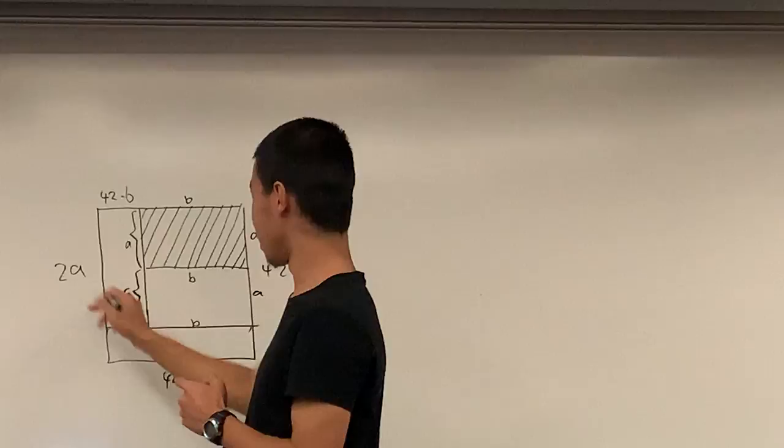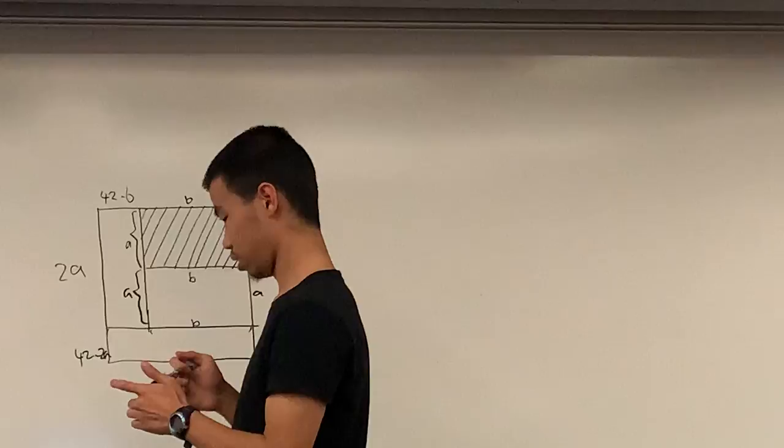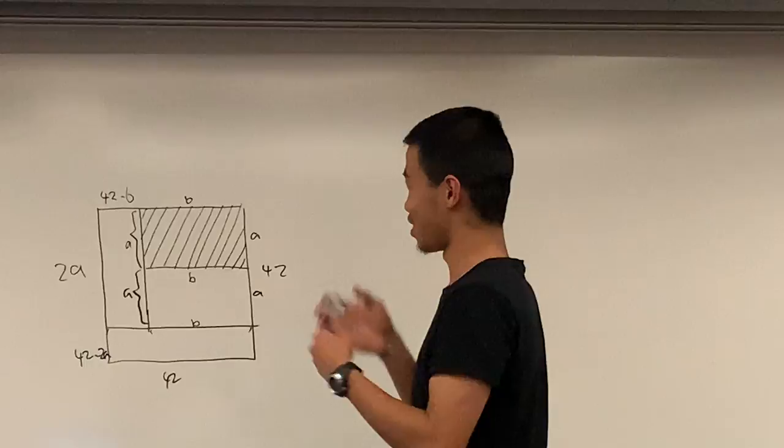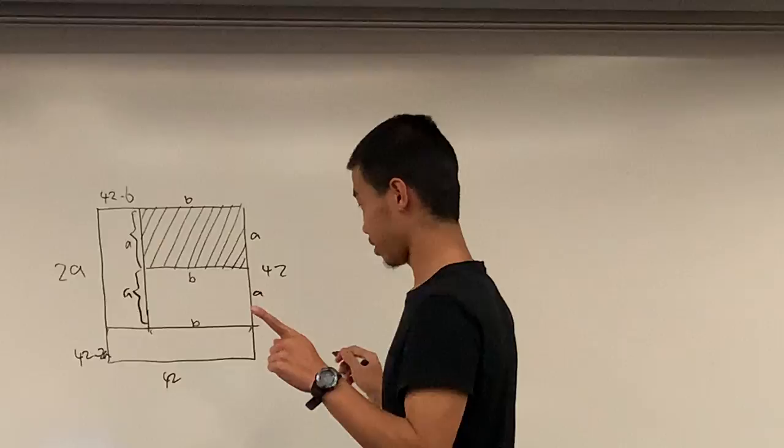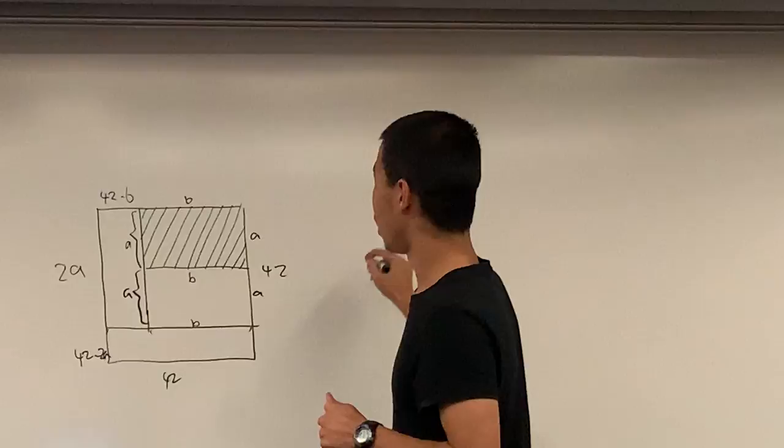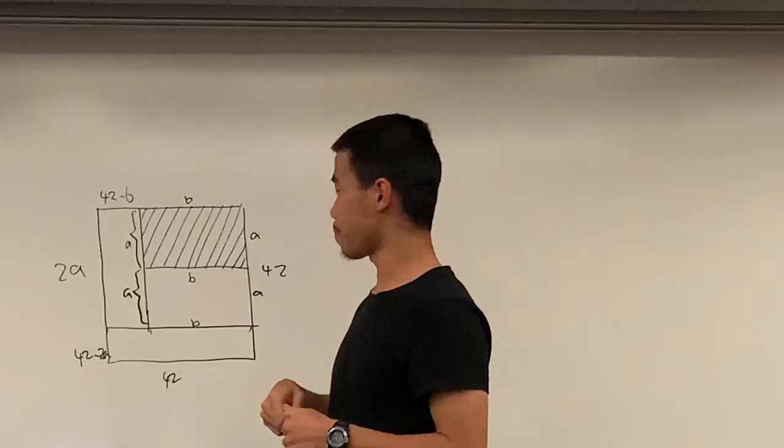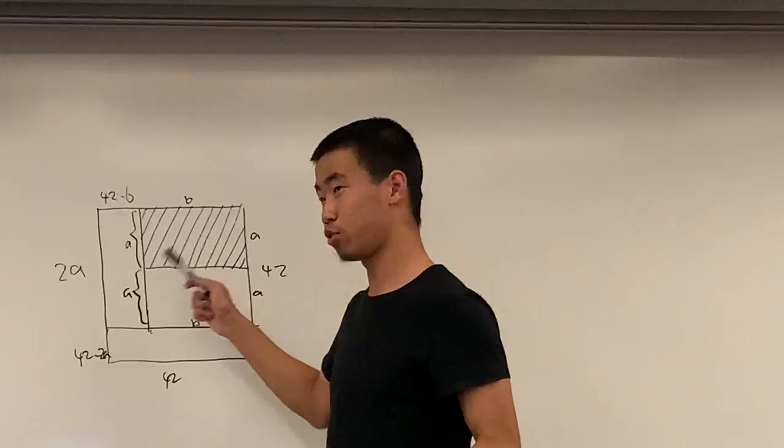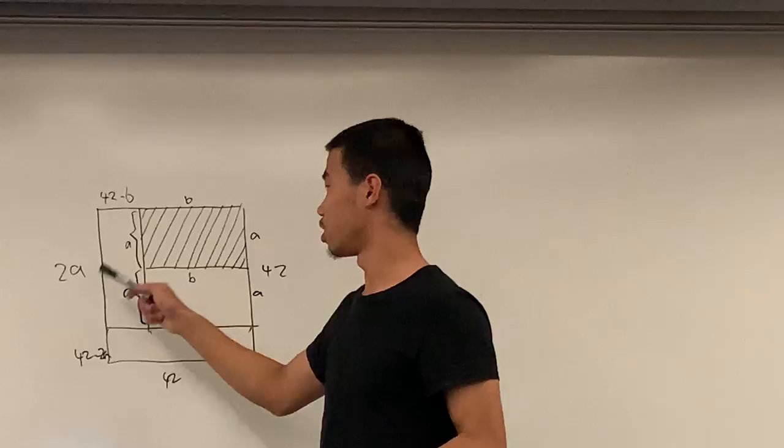This part is 42 minus 2A. So we get, are you guys okay if we, when we add things, we'll see the perimeter of these rectangles. Are you guys okay if we just say that we say A plus B instead of 2A plus 2B? Because like, everything's just doubled. Yeah, I don't know. Double this one, double this one. Yeah, double that one.